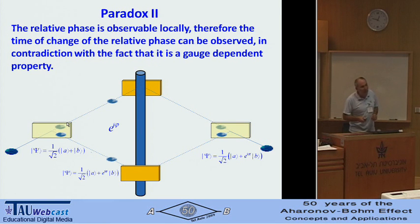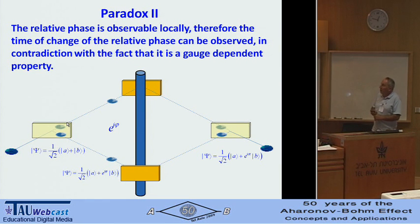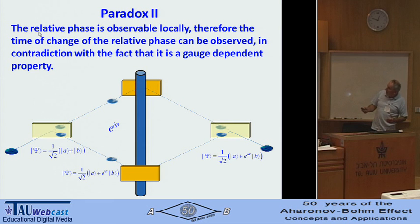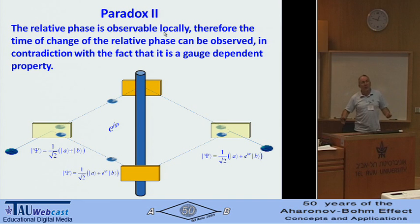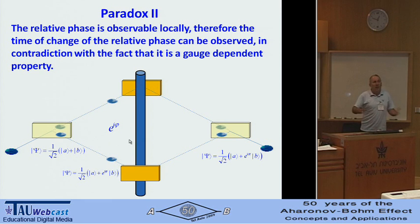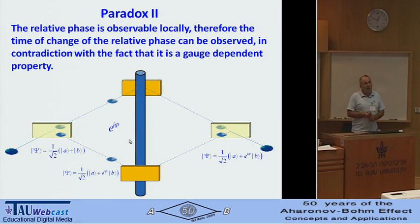The next paradox tries to say that the first paradox may be incorrect. The claim is: the relative phase is observable locally, and therefore the time of change of the relative phase can be observed — in contradiction with the fact that it is a gauge-dependent property. This becomes a paradox if the relative phase is indeed observable locally, which is not common knowledge and not obvious. If we can go locally make a measurement and determine the phase, we can find where it switched from plus to minus, in contradiction with it being unphysical and gauge-dependent.